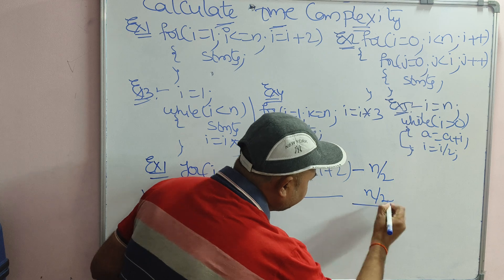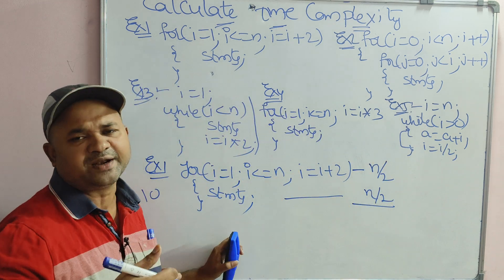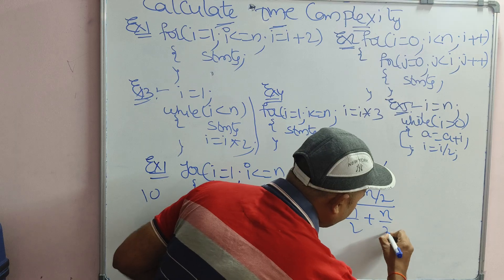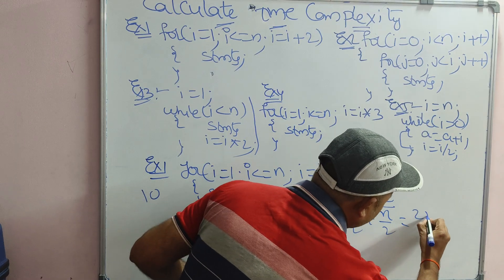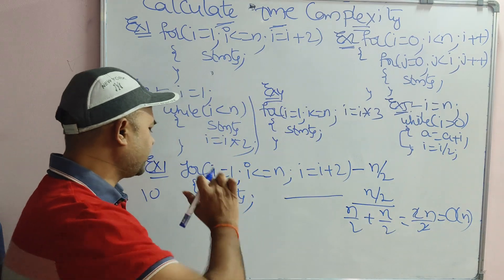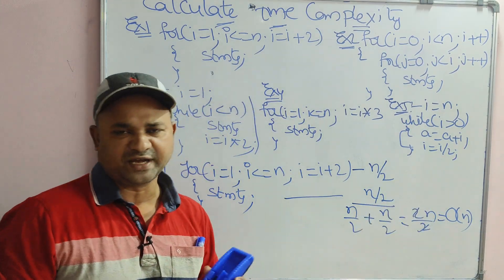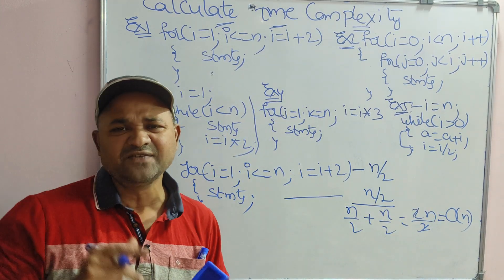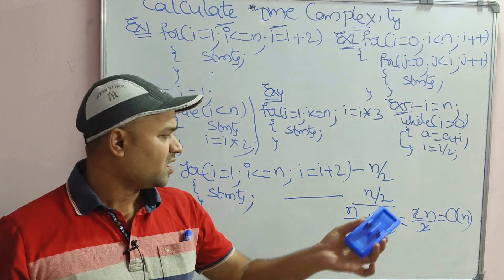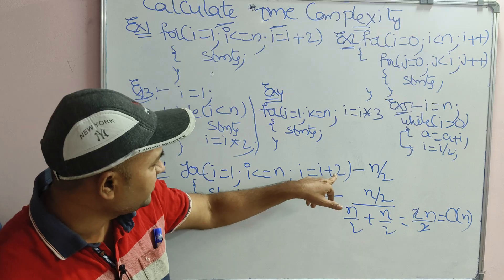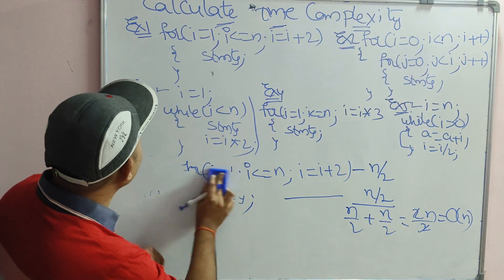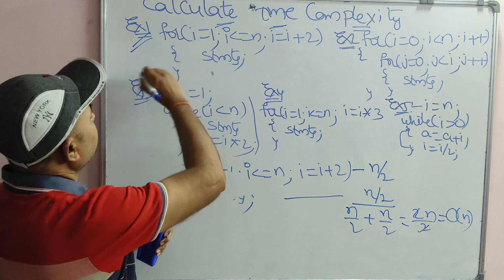For calculating the time complexity, we add n by 2 plus n by 2, giving 2n by 2, which equals n. So we can say that the time complexity of this for loop is order of n. If we have a single for loop, then directly we can say that the time complexity is order of n, even with incrementation like i plus 2.